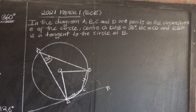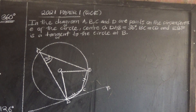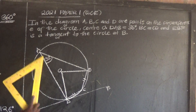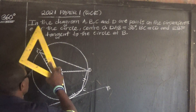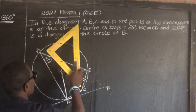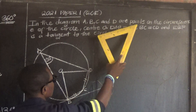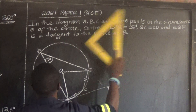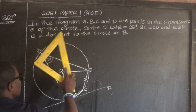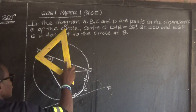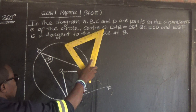Let us look at 2020-21, Paper 1. This is GCE. The question says: in the diagram, A, B, C, and D are points on the circumference of the circle, and the center of the circle is O.